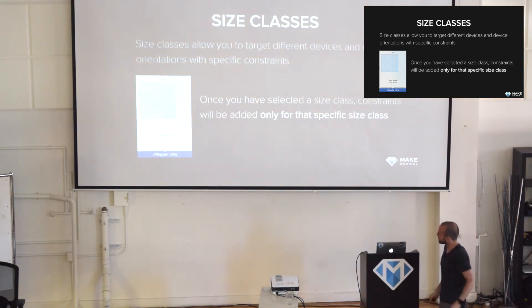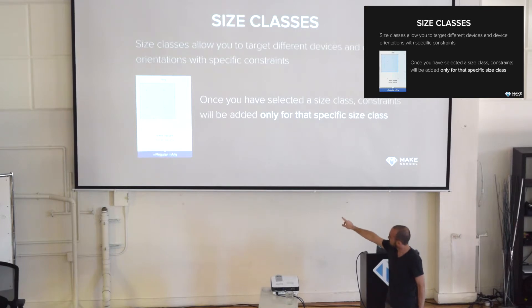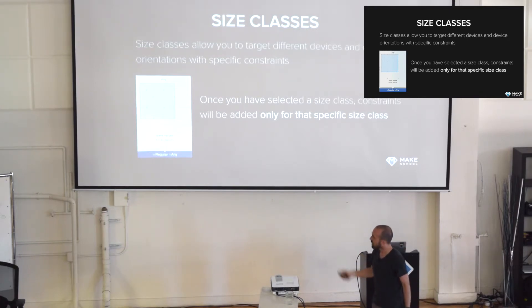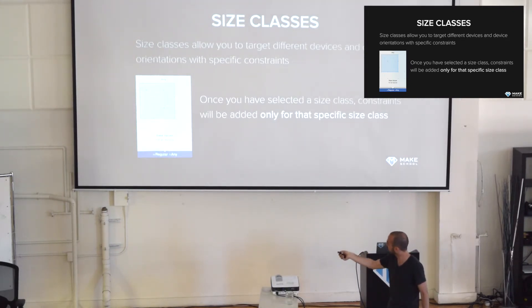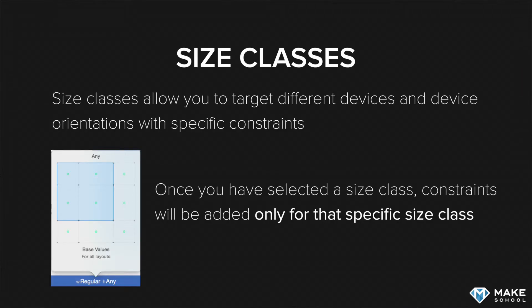Here's a short summary of what this looks like in storyboard. You can basically select one of the size classes you currently want to design for at the bottom — there's a bottom bar — and you get to choose from a 9x9 grid. You don't have to remember the names because you can just choose a grid that spans a width of 2 and a height of 3 and you'll see the different device sizes. Once you have selected that, you see a blue button bar in Interface Builder describing the current size class — for example, width is regular, height is any. Any design changes, constraints you add, or views you move around while this status bar is blue will only apply to that specific size class.